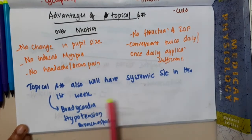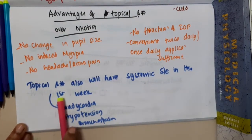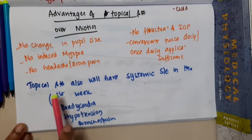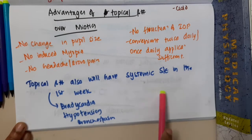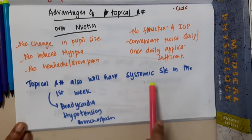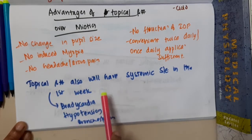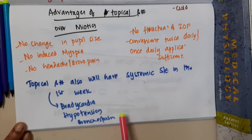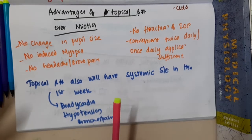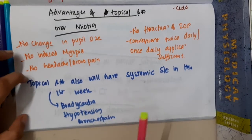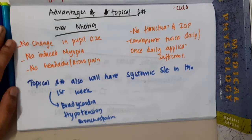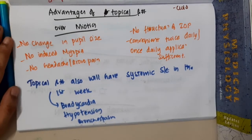One problem with topical beta blockers is that they can have systemic side effects. When used in the eye, systemic side effects such as bradycardia, hypotension, and bronchospasm may be seen in the first week. These are the advantages and one key disadvantage of topical beta blockers.